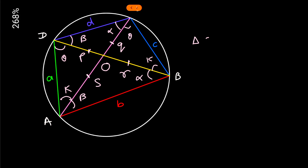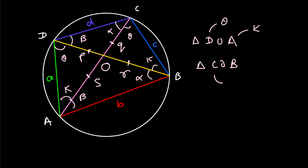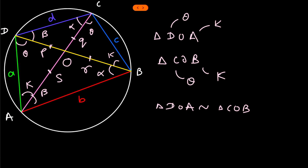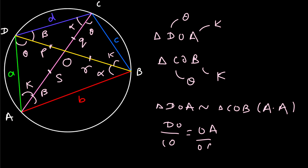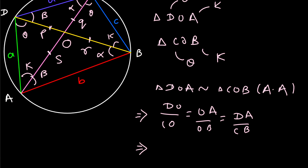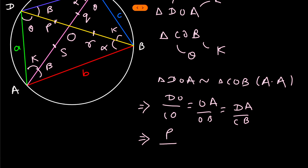Look carefully in triangle DOA: angle D is theta and angle A is k. In triangle COB: angle C is theta and angle B is k. Two angles are equal so these triangles are similar by angle-angle (the third angle is equal by vertically opposite angles). Therefore triangle DOA is similar to triangle COB. Taking their ratios equal: DO upon CO equals OA upon OB equals DA upon CB. Substituting variables: p upon q equals s upon r equals a upon c.